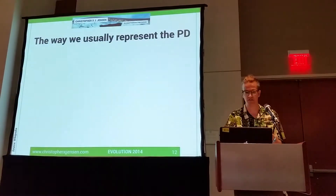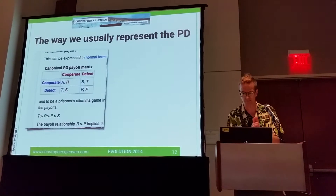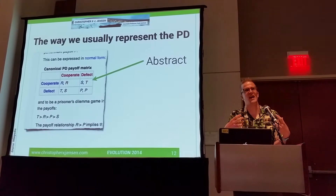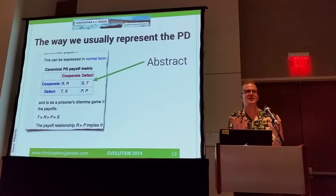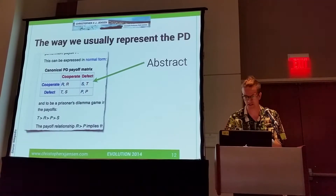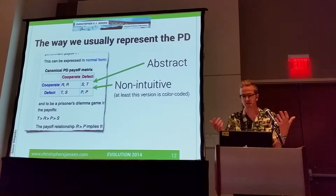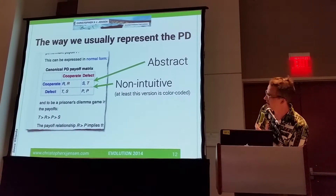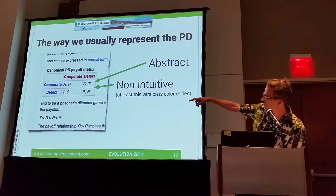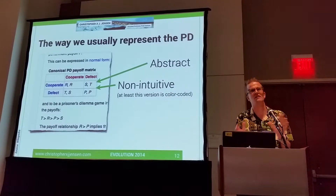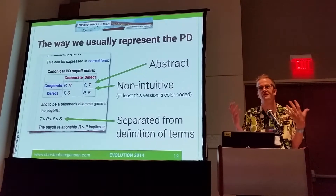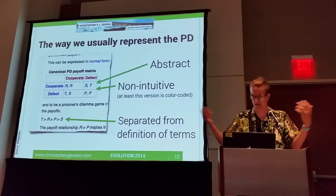We also looked at how to represent the Prisoner's Dilemma matrix itself. The typical Wikipedia version uses T, R, S, P — very abstract. You have to know that the column player's payoff comes first; there's nothing intuitive about the graphic. The color-coded version at least helps, but the labels don't jump out at you. You have to separately learn that the definition of Prisoner's Dilemma is a relation among these different payoffs. So we wanted to make better representations for students who have never even heard of game theory — this being their first introduction.